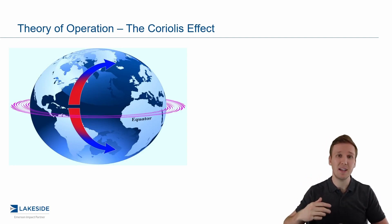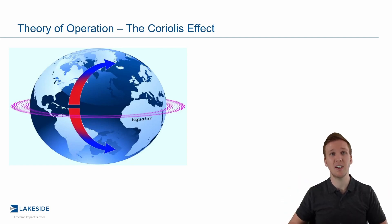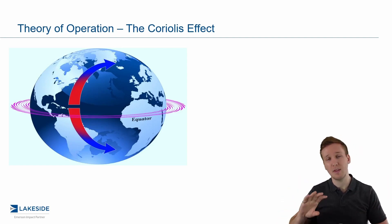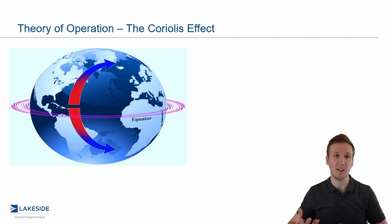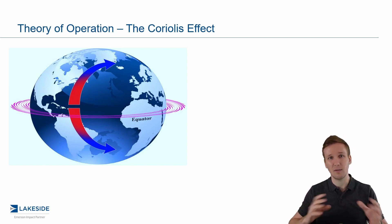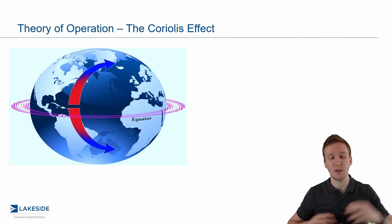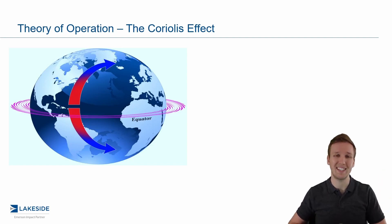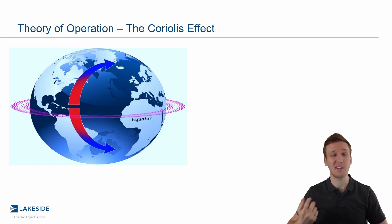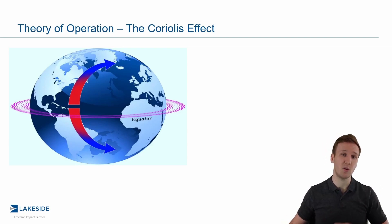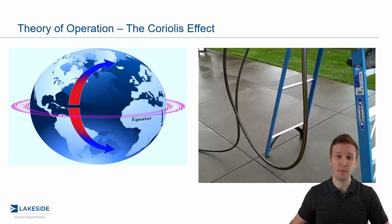If you flip this and did it with someone in Brazil, that ball would travel to the left — and that has to do with the rotation of the Earth and the fact that the Earth is traveling at different speeds as you move into the northern or southern hemispheres. It's the same principle that applies to why toilets flush one way on one continent versus another. We take advantage of this effect when we utilize Coriolis flow meters.